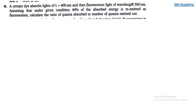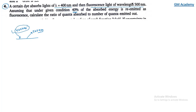Next is question 4. A certain dye absorbs light of wavelength 400 nanometer and then emits fluorescence light of wavelength 500 nanometer. 40% of absorbed energy is re-emitted. We need to find the ratio of quanta absorbed to quanta emitted.